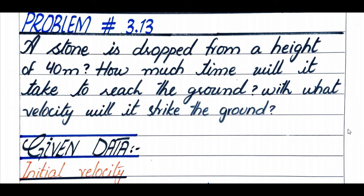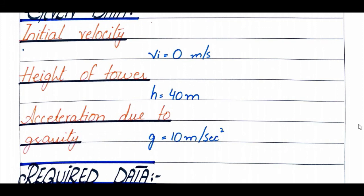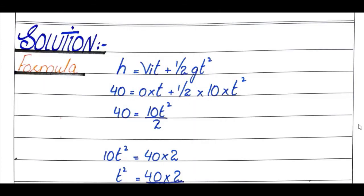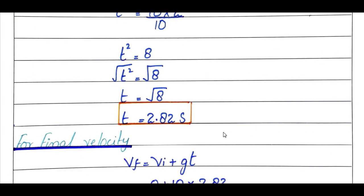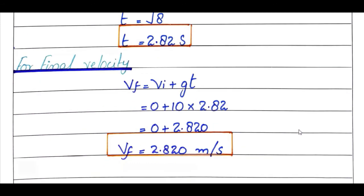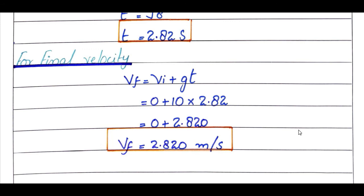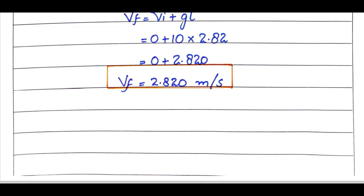Problem number 3.13: A stone is dropped from a height of 40 meters. How much time will it take to reach the ground and with what velocity will it strike? Initial velocity is 0, height is 40 meters, g = 10 m/s². Using h = vi·t + ½g·t² and taking square root to find time, then vf = vi + g·t gives final velocity of 28.28 m/s.